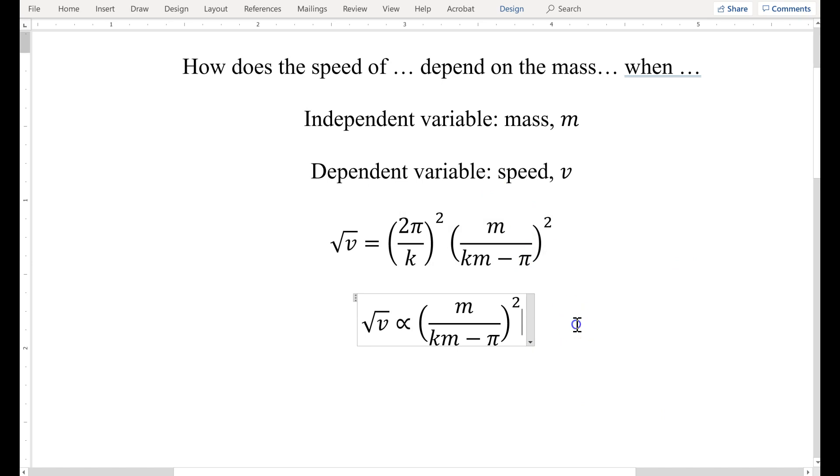Now you might think, oh gee, isn't there a simpler way to write this? But when you have something like in the numerator and denominator like this, this would be the simplest way possible. So you can't simplify any further. And that's the proportionality we expect.